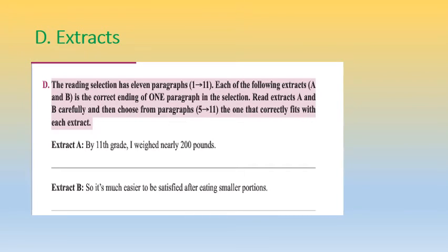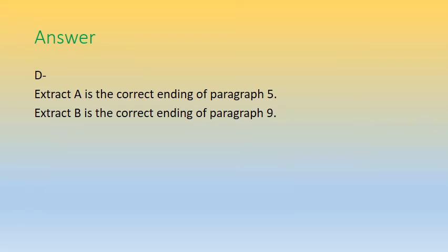Now the extracts exercise. The reading selection has 11 paragraphs. You need to identify which paragraph each extract belongs to. Extract A — 'By 11th grade, I weighed nearly 200 pounds' — was talking about formative school years, so it is the correct ending to paragraph 5. Extract B — 'So it's much easier to be satisfied after eating smaller portions' — relates to the paragraph about no longer craving much food, making it the correct ending to paragraph 9.